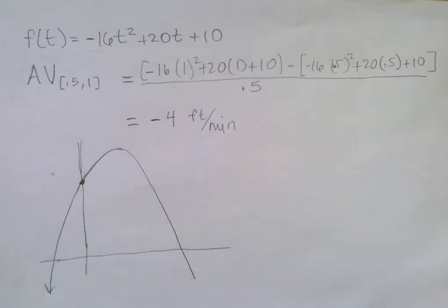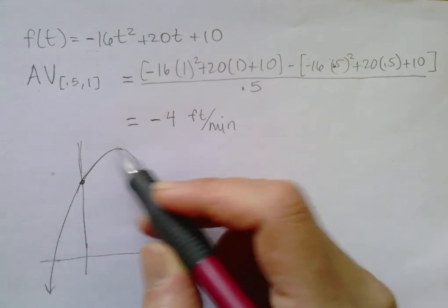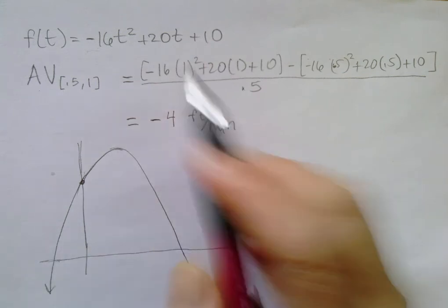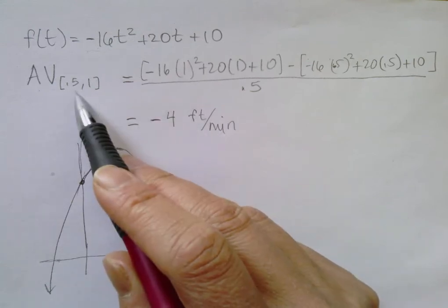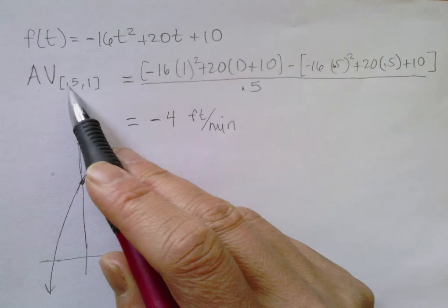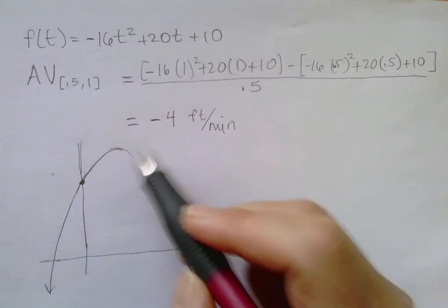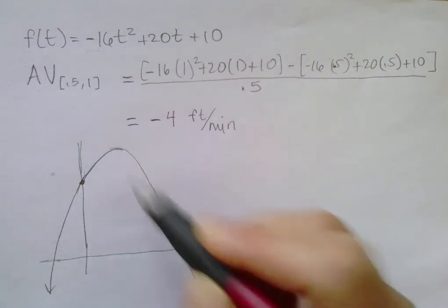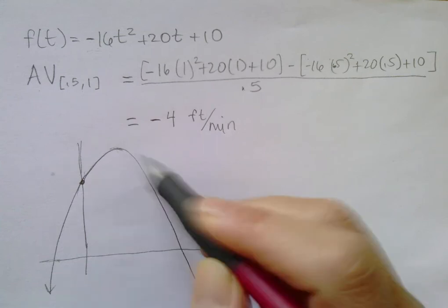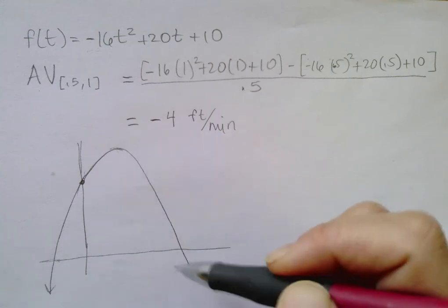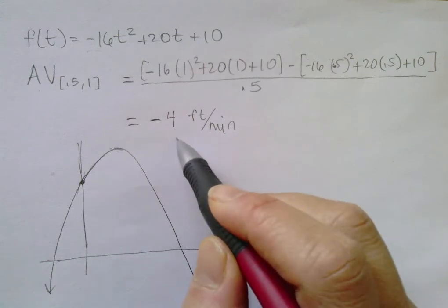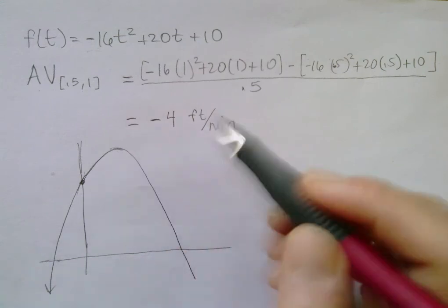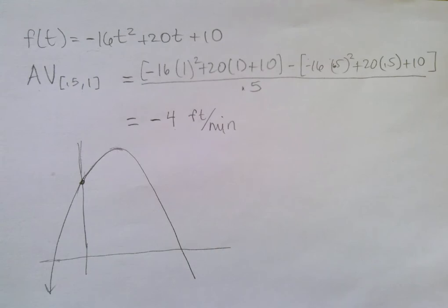So later on in this calculus class we can use other techniques to find this point very easily. But given this calculation we know that at some point after t equals 0.5, the movement of the object was in the opposite direction. Alright, so that's what this tells you. It's a valid answer and it tells you something very important about the movement of that particle.